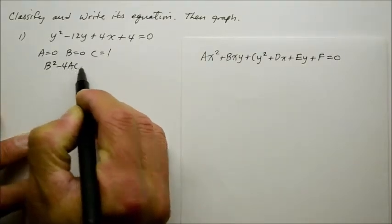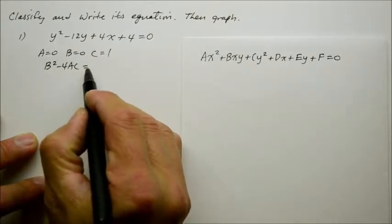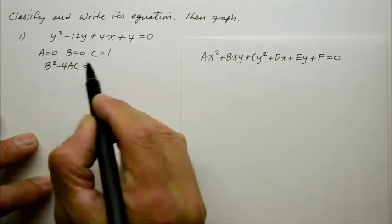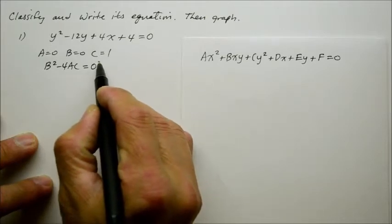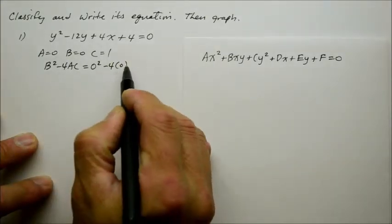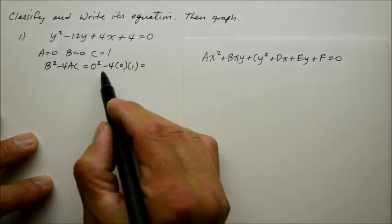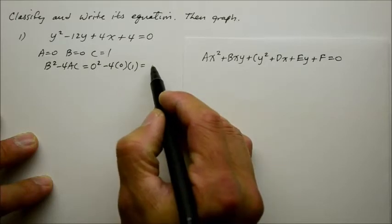And then we are going to use a discriminant with the uppercase letters, b² minus 4ac. And let's determine what that becomes. The b, if I go through the process, is 0² minus 4 times a, which is 0, times c, which is 1. And you realize, when you evaluate, you get a 0.